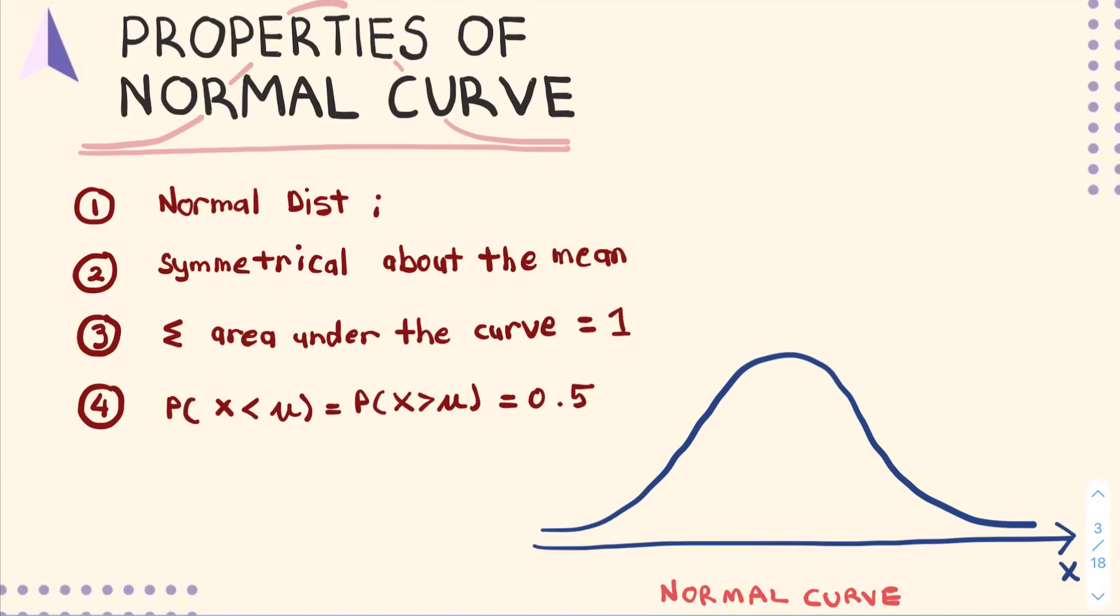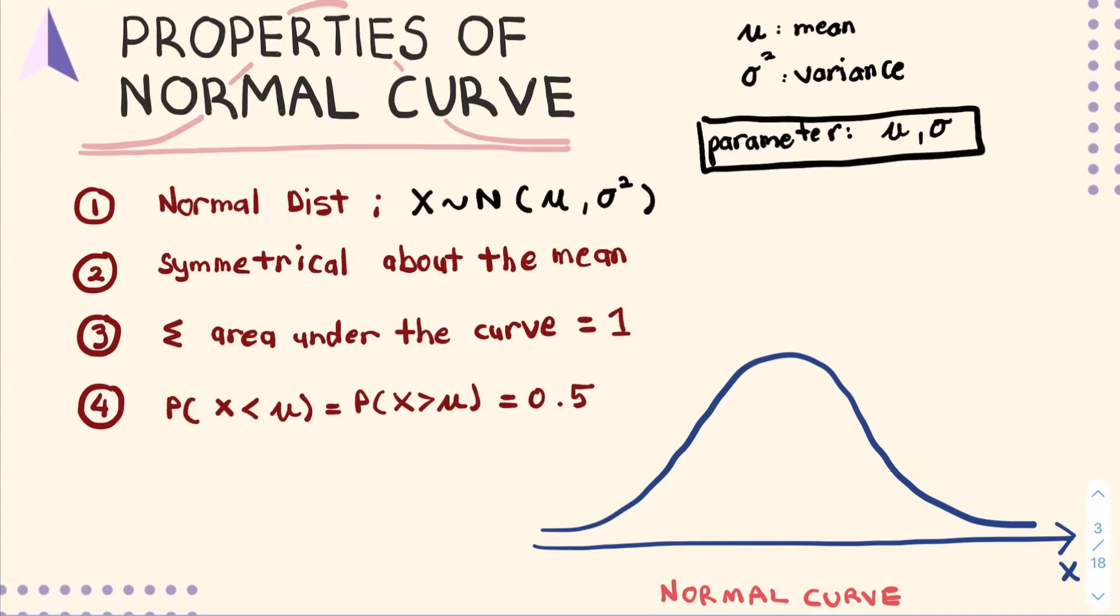The properties of the normal curve. Now, the normal curve is meant for the normal distribution, where you can write your notation for the normal distribution as X having a normal with the parameter mean and sigma square as variance. Now mean is represented by μ and sigma square is variance, but the parameter for the normal is basically only mean μ and sigma σ. Now you have to remember this.